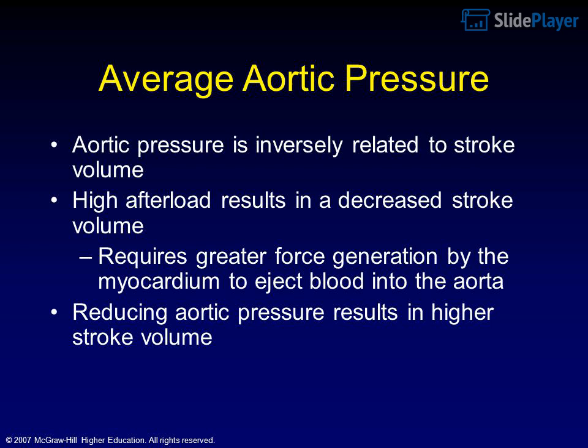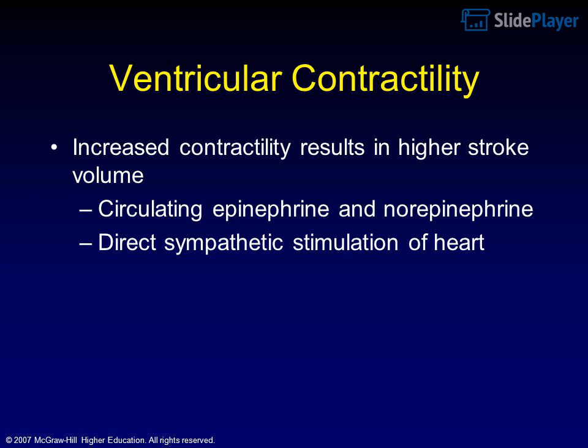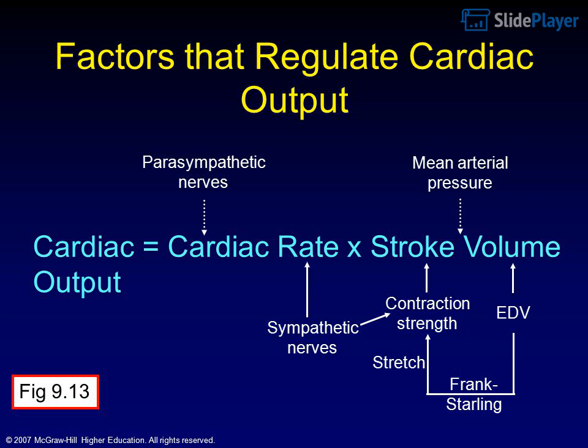Ventricular contractility: increased contractility results in higher stroke volume, stimulated by circulating epinephrine and norepinephrine and direct sympathetic stimulation of the heart. Factors that regulate cardiac output include parasympathetic nerves, mean arterial pressure, sympathetic nerves, EDV, and contractility strength. Cardiac output equals heart rate times stroke volume, influenced by the Frank-Starling mechanism and stretch. These relationships are summarized in Figure 9.13.